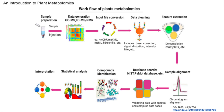This diagram presents the workflow of plant metabolomics, a field that involves the comprehensive study of small molecules within plants. The process is sequential and each step is critical to ensure the quality and interpretability of the data. Sample preparation is the first step, where the plant sample is prepared for analysis — this often involves homogenization and extraction to isolate the metabolites, before being injected into the analysis instrument. The prepared samples are then analyzed using instruments like gas chromatography mass spectrometry, liquid chromatography mass spectrometry, or nuclear magnetic resonance spectroscopy, which detect and quantify the metabolites present.